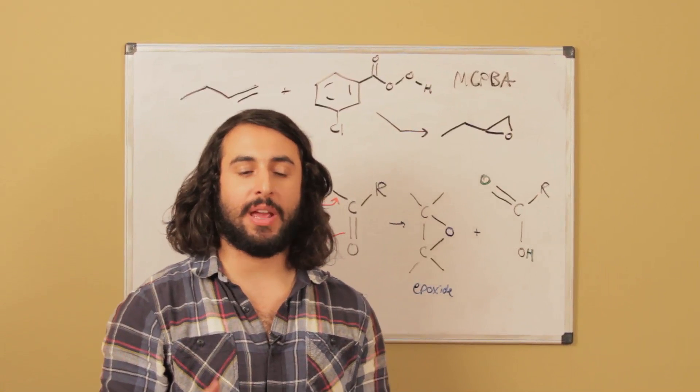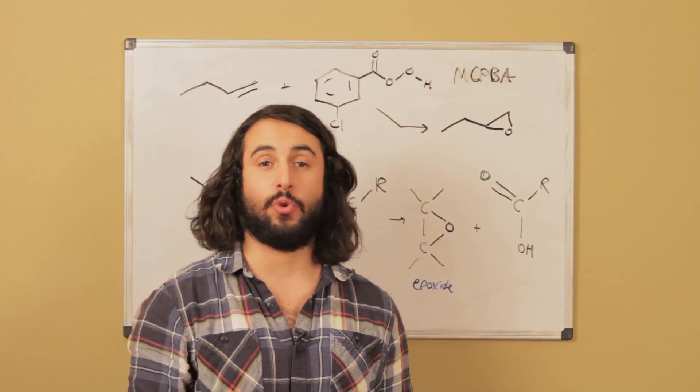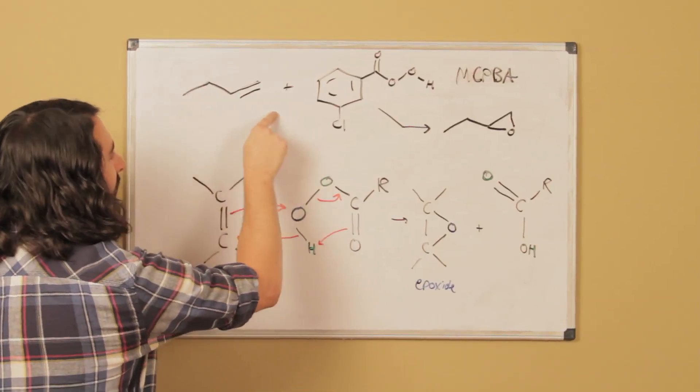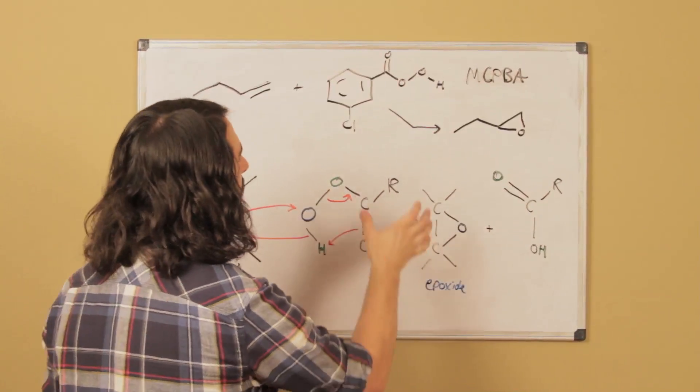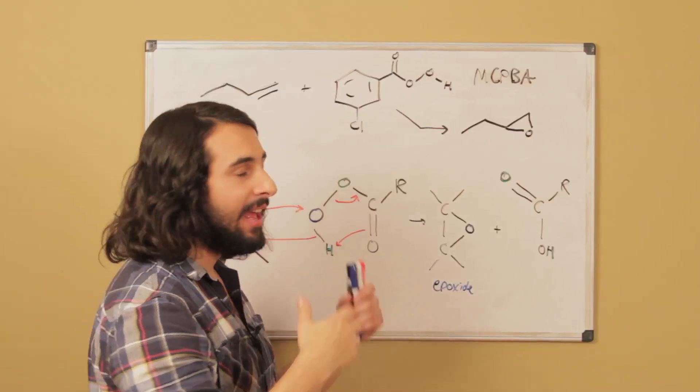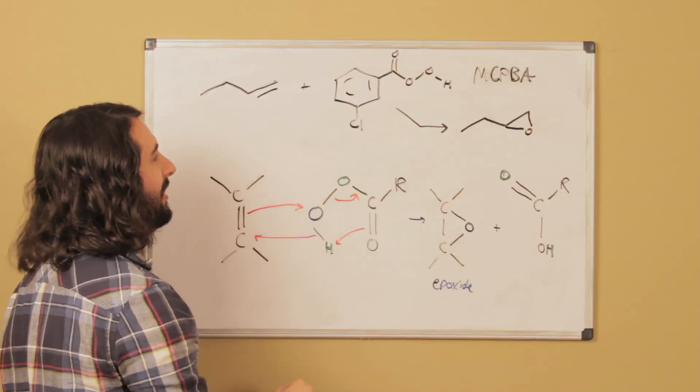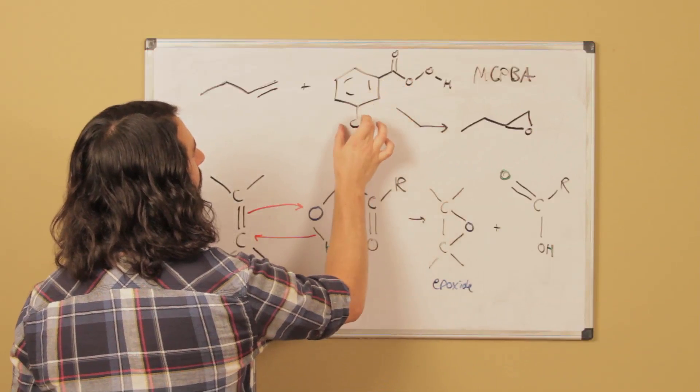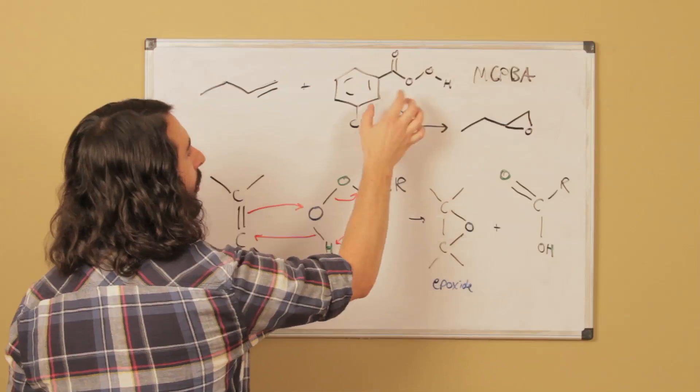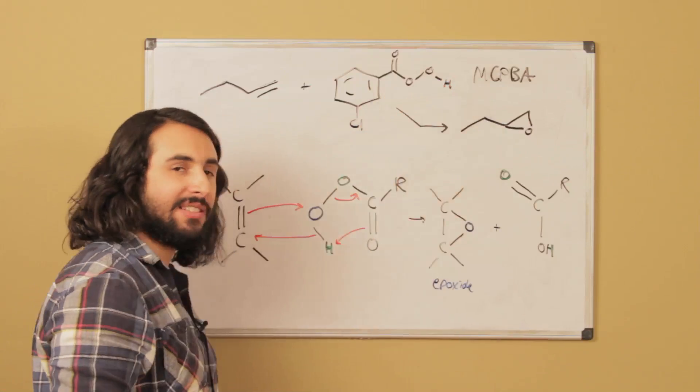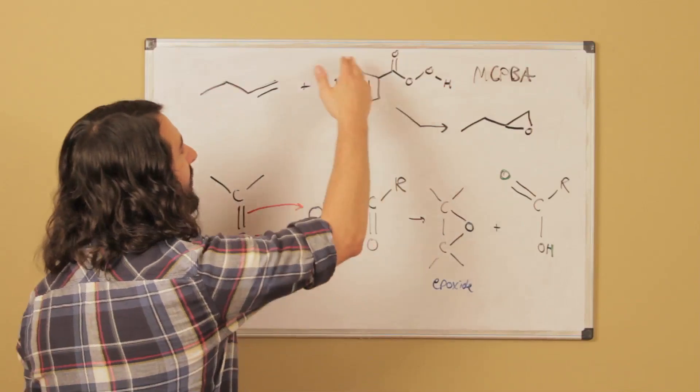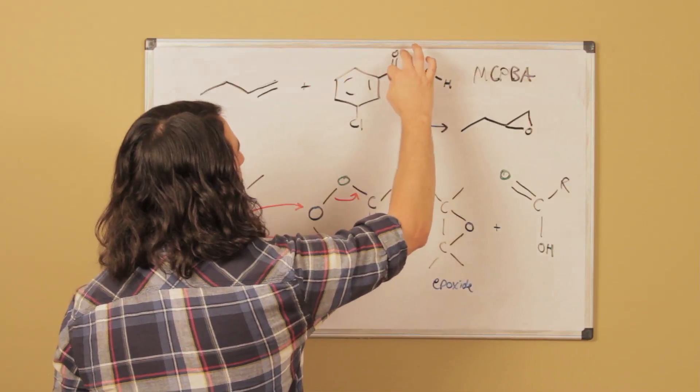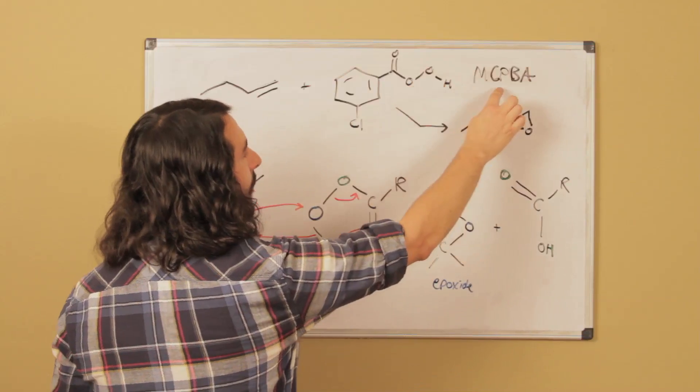Since we're talking about epoxides we may as well talk about how they might form. One strategy we have for generating epoxides involves reacting alkenes with certain peroxybenzoic acids like MCPBA. MCPBA is metachloroperoxybenzoic acid, so metachloro means from this group there's a chloro in the meta position. Then peroxybenzoic acid, we know benzoic acid is a benzene ring and then a carboxylic acid, so that would be carbonyl to the oxygen and then OH, but the peroxy...